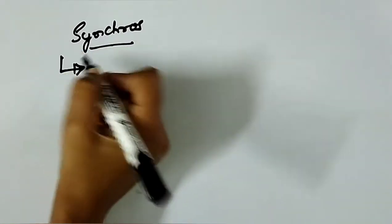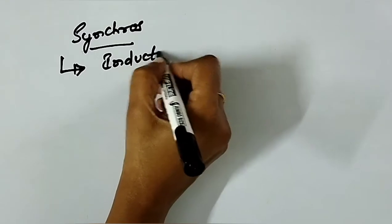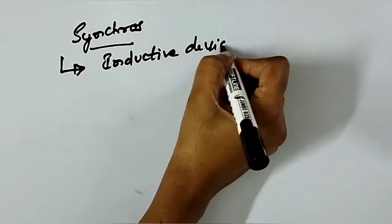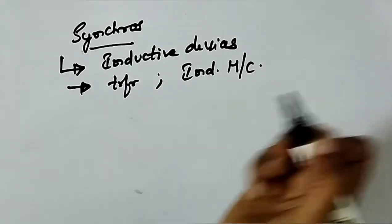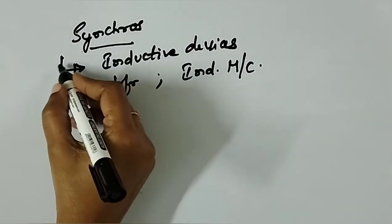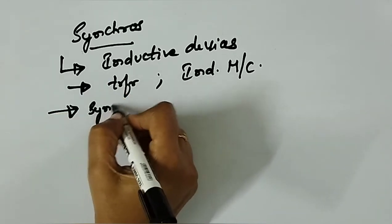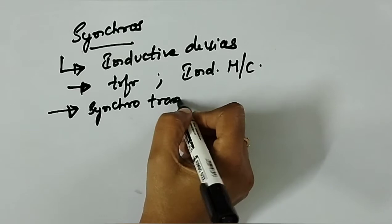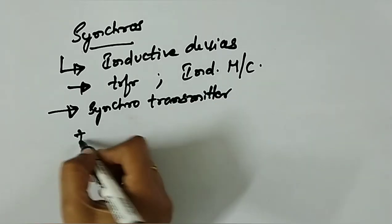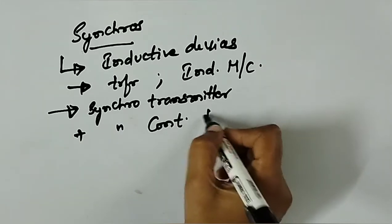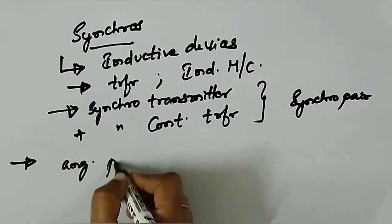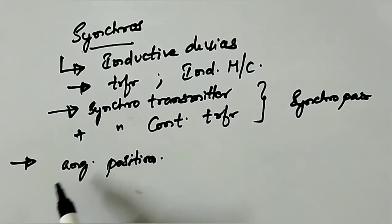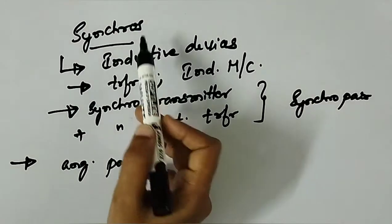Synchros are inductive devices working on the principle of transformer induction machines. This is a combination of a synchro transmitter and synchro control transformer, used to control the angular position of the load from a remote place, and for automatic correction of changes due to disturbances in the angular position of the load. For that purpose we will be opting synchros.